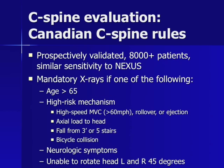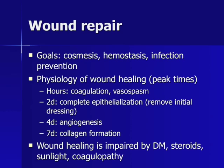Turning from major trauma to simple lacerations and abscesses, the goals of wound repair include cosmesis, hemostasis, and infection prevention. Wound healing physiology: coagulation and vasospasm occur within hours; complete epithelialization occurs at 48 hours, allowing initial dressing removal; angiogenesis peaks at 4 days; collagen formation peaks at 7 days. Wounds take about 6 months to heal completely, with tensile strength returning to only about 80% of normal.